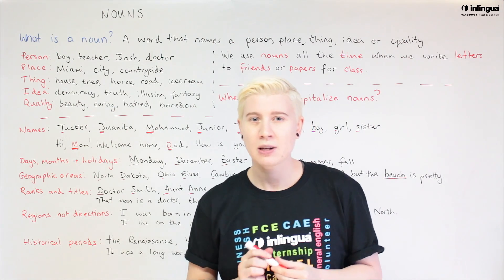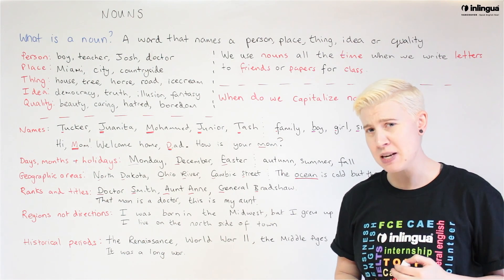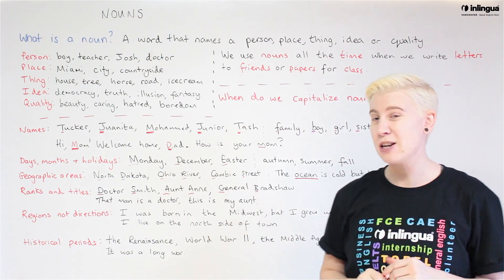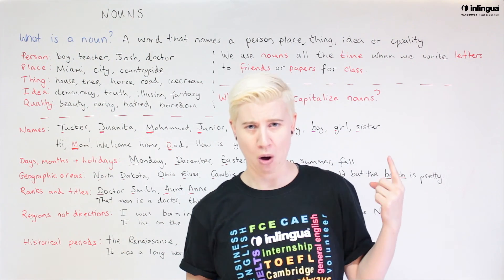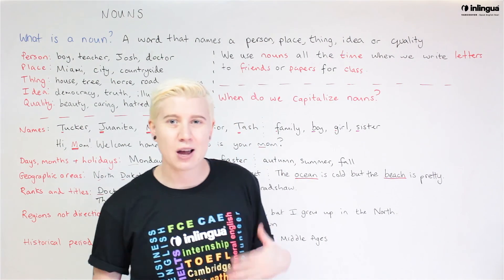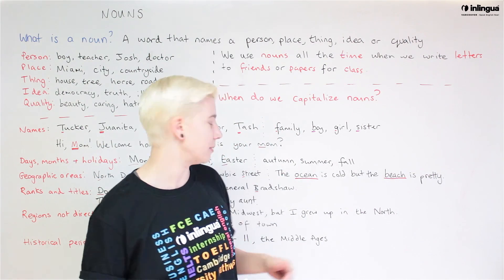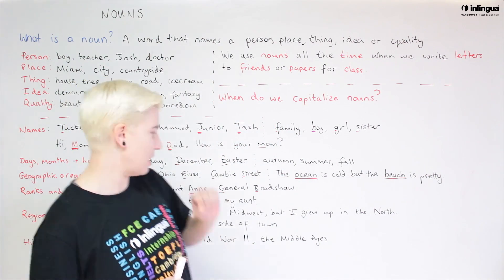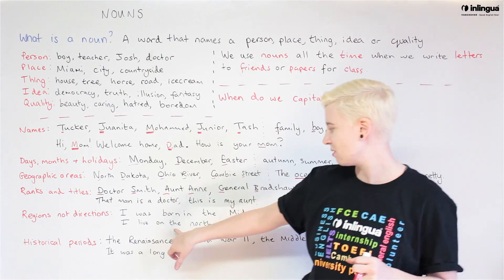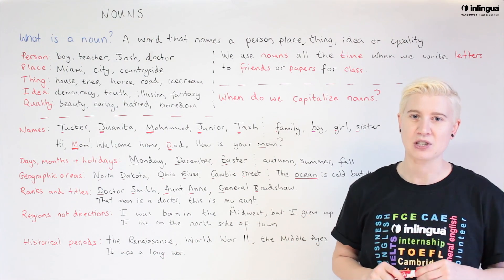For regions — another word for region would be areas. 'I was born in the Midwest' — Midwest is a region in the USA. 'But I grew up in the North' — a region again. But if we are using it to describe a direction in town, like 'I live on the north side of town,' that's a direction and we don't need a capital for that north.